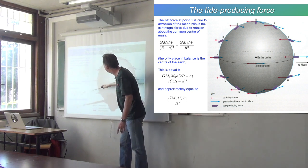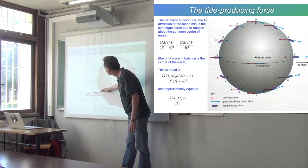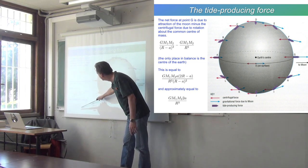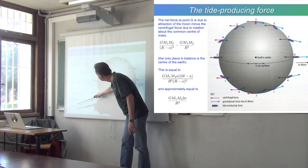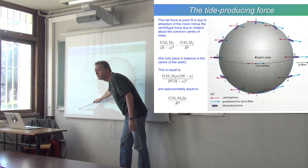You can combine those two terms to write the equation in full here and then simplify it. And it's approximately equal to this: It's G times M1 times M2 times 2 times the radius of the Earth divided by R cubed. So that's important. You get an R cubed on the bottom.